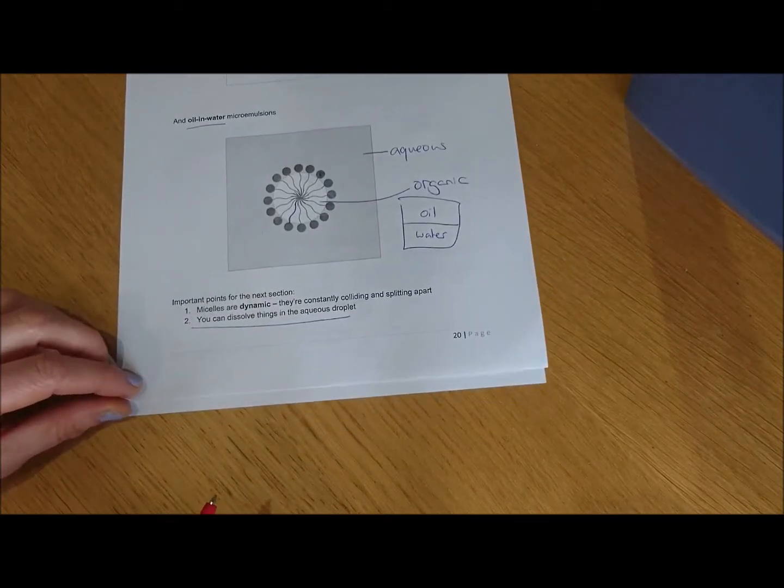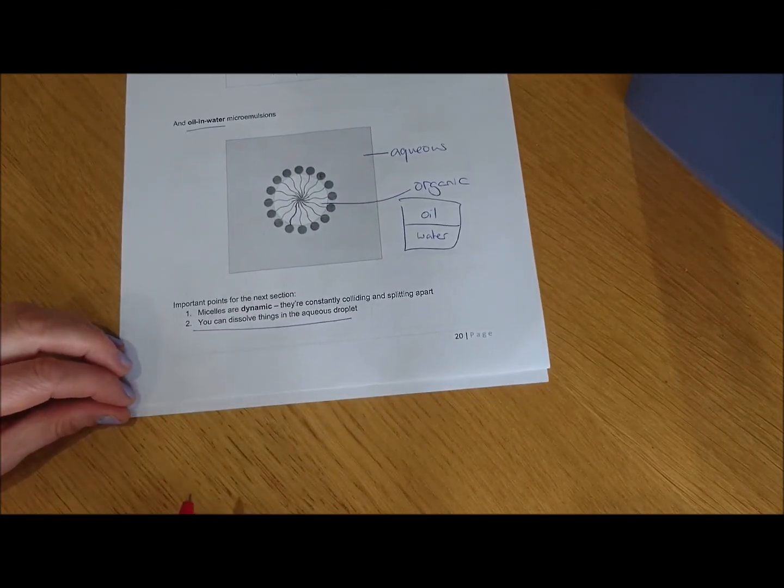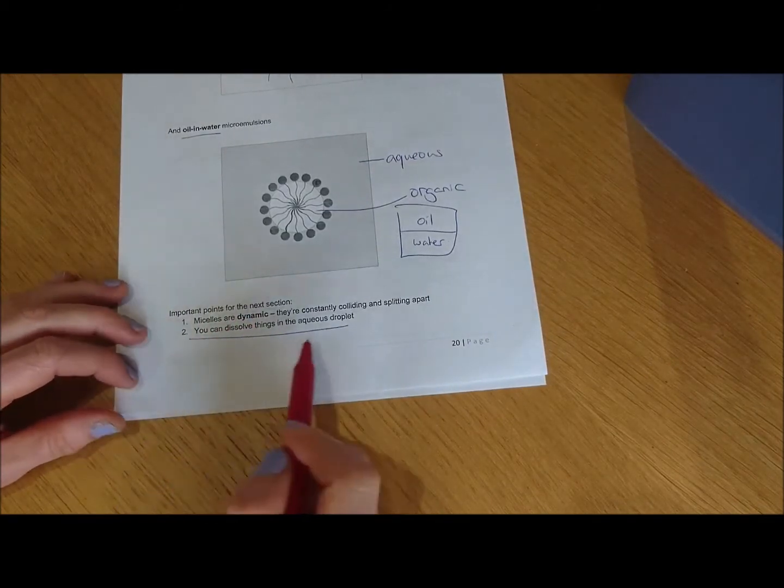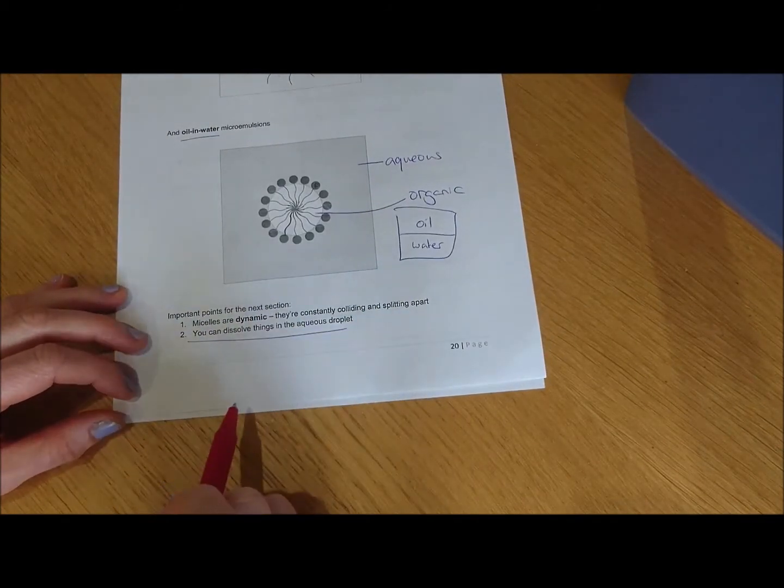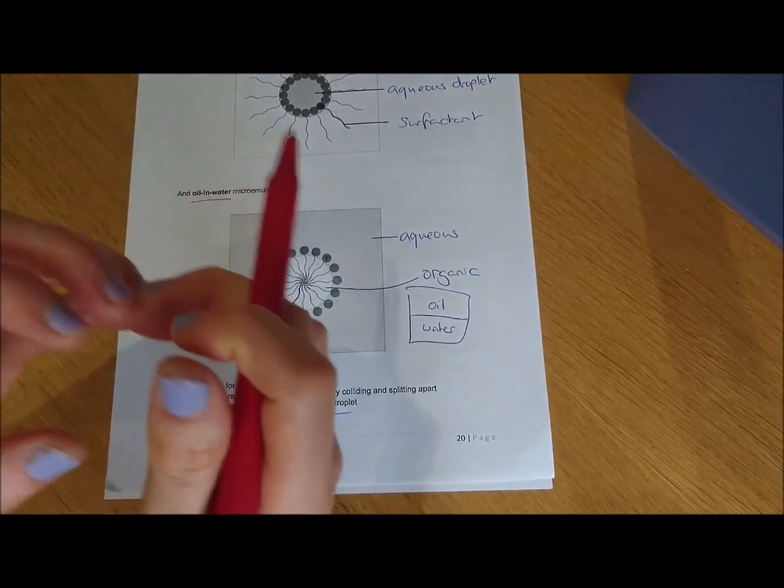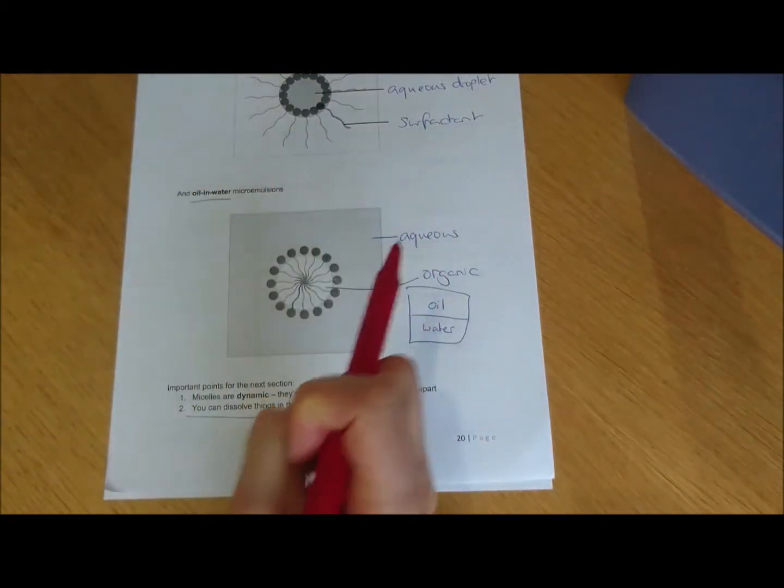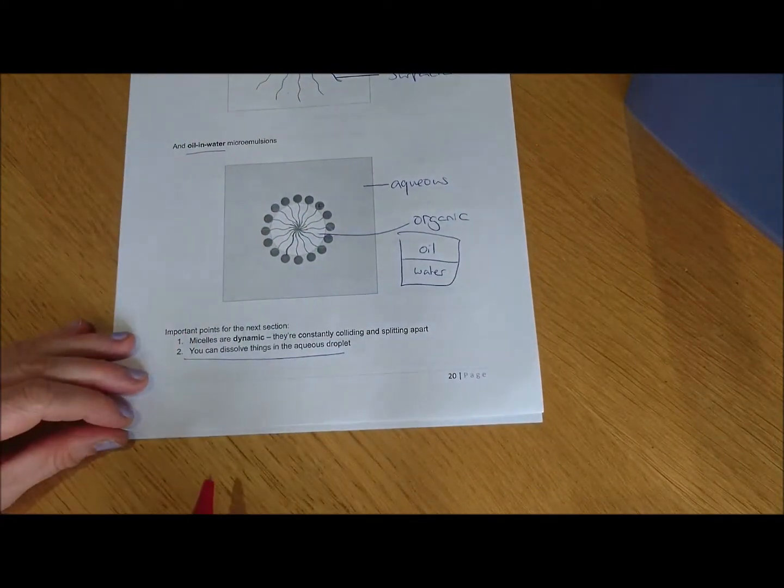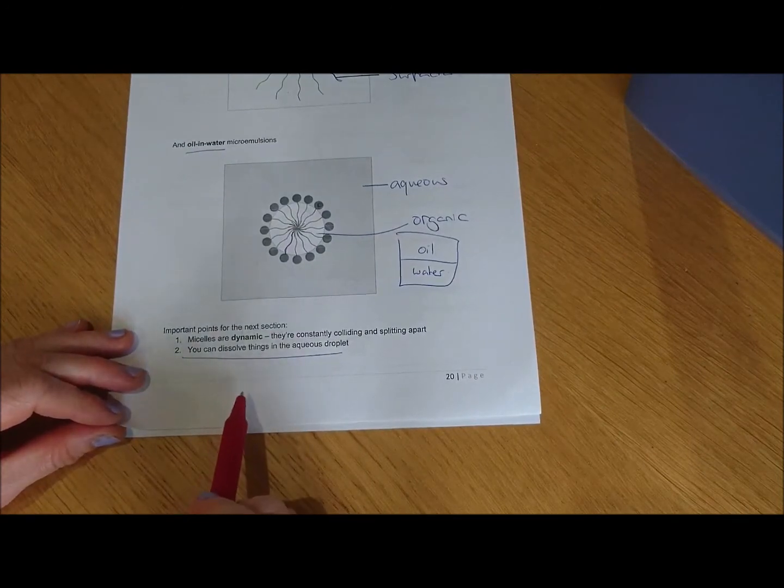Just a few important points before we get into microemulsion synthesis. One is that micelles are dynamic, so they're constantly colliding and splitting apart. So you've got one droplet here that might collide with another droplet, stick around for a bit, and then split apart back into two droplets again. And when they do that, the contents mix. That's what becomes important when we talk about microemulsion synthesis.